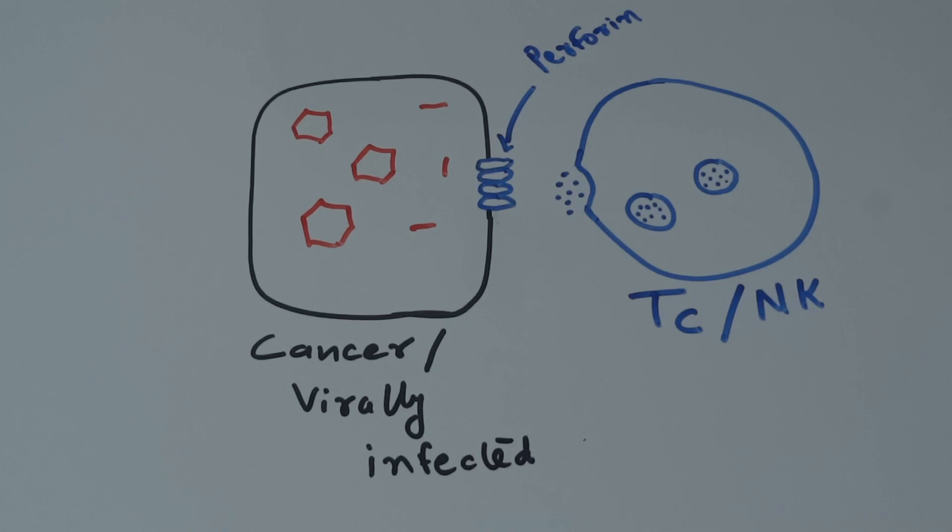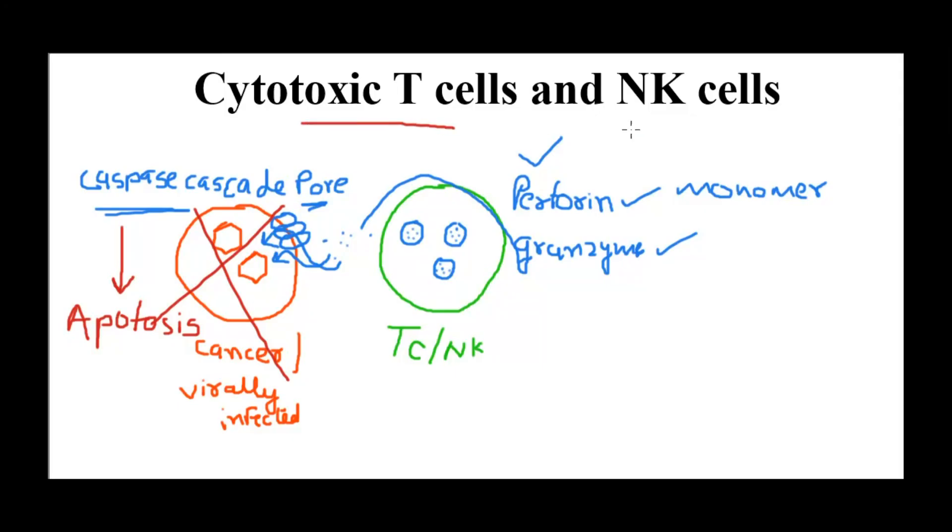Perforin is a pore-forming protein, so it is going to insert itself in the target cell membrane and form a pore. Through this pore, granzymes will enter, which are serine proteases that activate the caspases in the cell. Once the caspase cascade is activated, it results in apoptosis of the target cell.